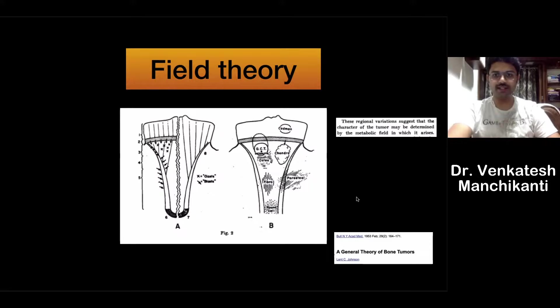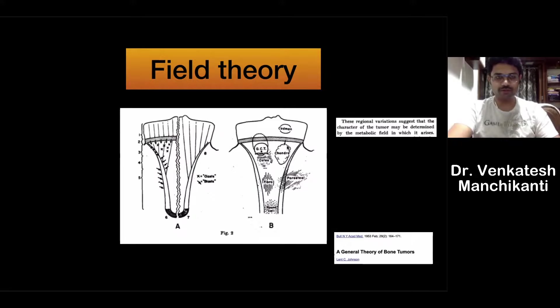Initially, there was a theory proposed called the field theory, published in the year 1953. If you see the image, there are different kinds of parts of the bone with various types of predominant cells occurring within. This suggests that the regional variations in cell character or the metabolic field at each point of the long bone will lead to certain specific bone tumors — that is the reason why we see bone lesions with a predilection to a particular site in the long bone.